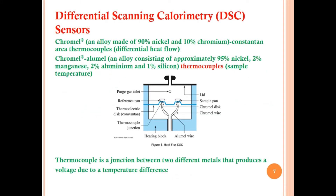The sensors in the DSC instrument include chromel, an alloy made of 90% nickel and 10% chromium, and constantan — these are area thermocouples measuring differential heat flow, which is the difference in heat between the sample and reference. Chromel-alumel is an alloy of approximately 95% nickel, 2% manganese, 2% aluminum, and 1% silicon, and is also a thermocouple that measures sample temperature.